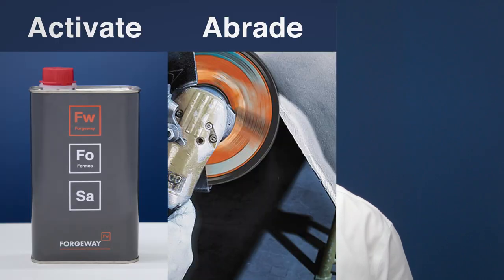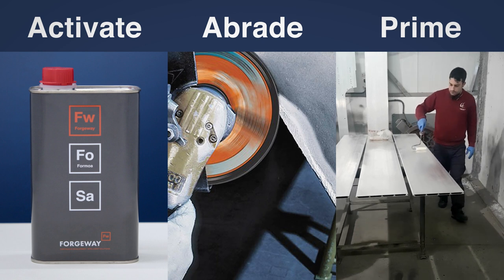Then activate, abrade, or prime the surface, depending on what your adhesive choice requires. Also ensure there are no burrs, as these can lead to corrosion on the painted aluminium.